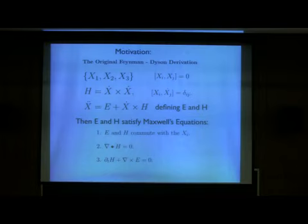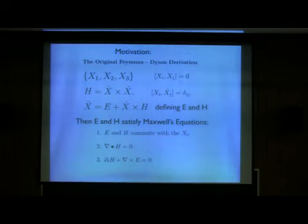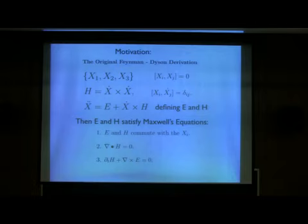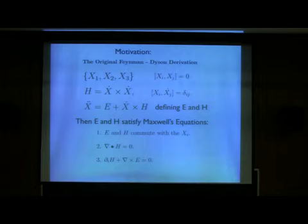You define h or b as the non-commutative vector cross product of x-dot with itself — essentially the commutator of xi-dot with xj-dot, shifted by indices. Then if you define an e field by x-double-dot equals e plus x-dot cross h using the usual formula, then e and h will satisfy Maxwell's equations: the divergence of h equals zero, and the time rate of change of the magnetic field is related to the curl of the electric field.